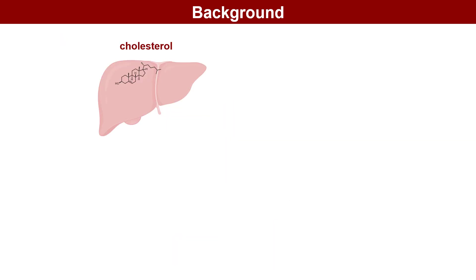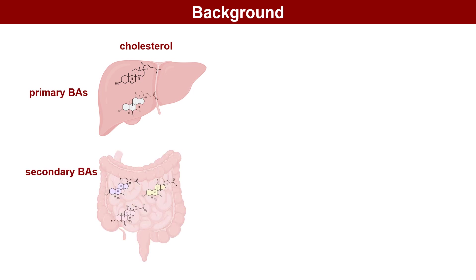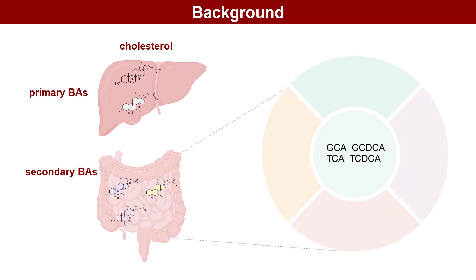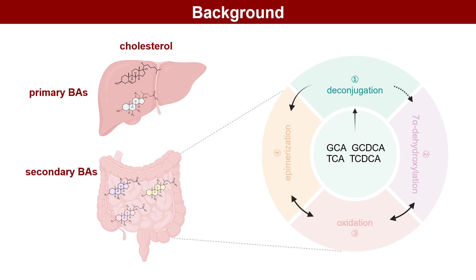These cholesterol-derived biomolecules are synthesized in the liver and undergo four key modifications by the intestinal microbiota: deconjugation, 7-alpha-dehydroxylation, oxidation, and epimerization.